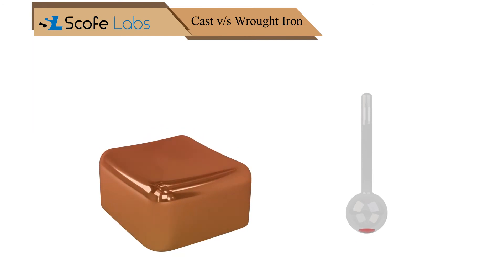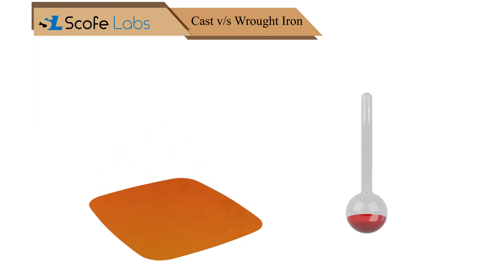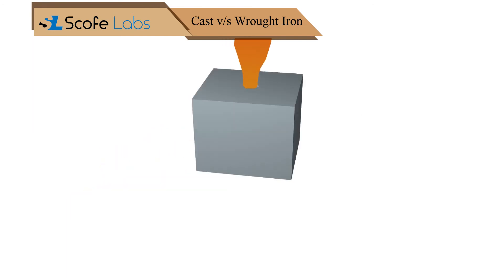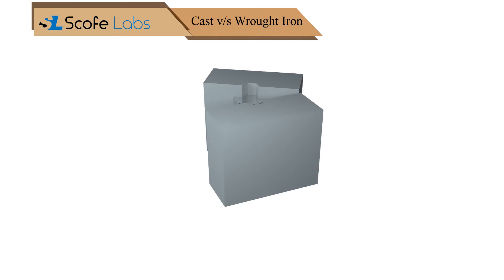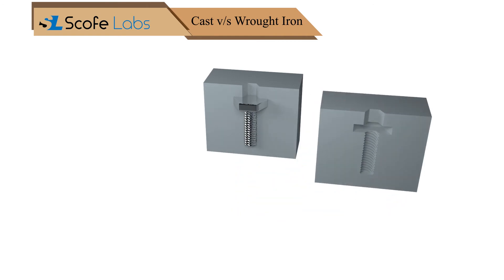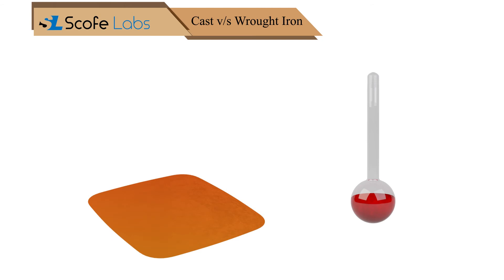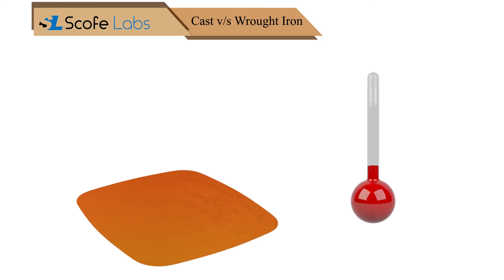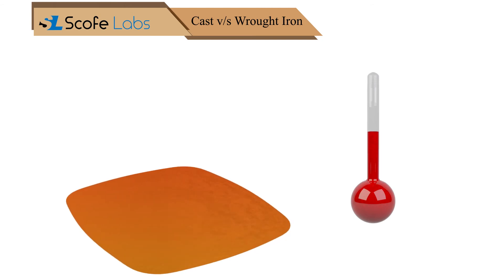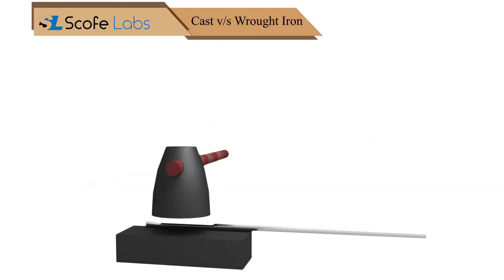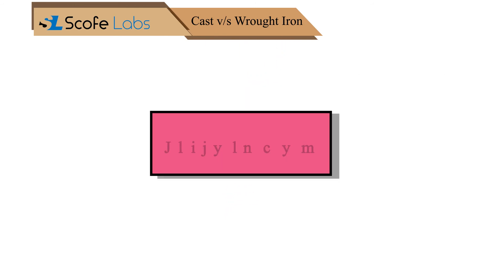Metals used for cast products have a low melting point, which makes it easier for melting and pouring into a mold. Metals used for wrought products have a high melting point, which makes it easier to handle them while hammering and forging.